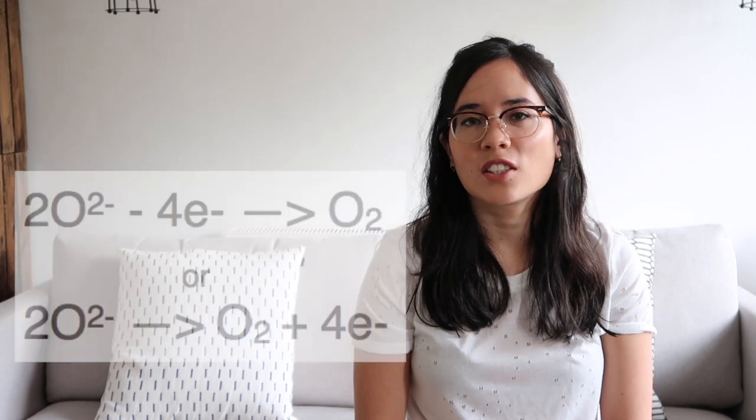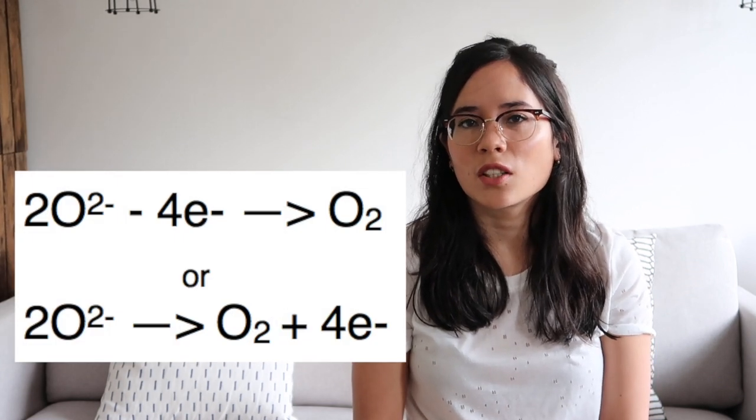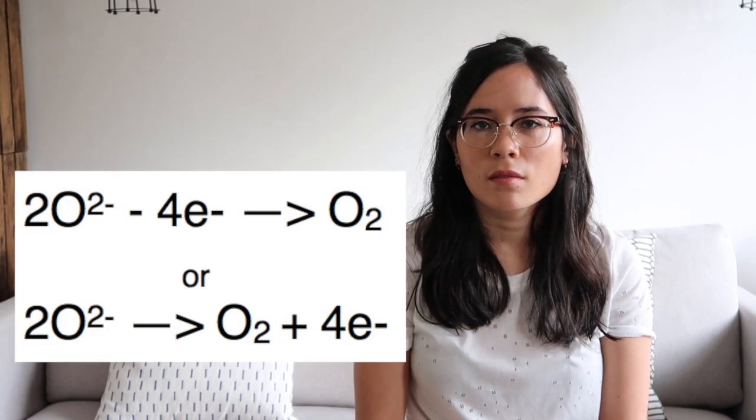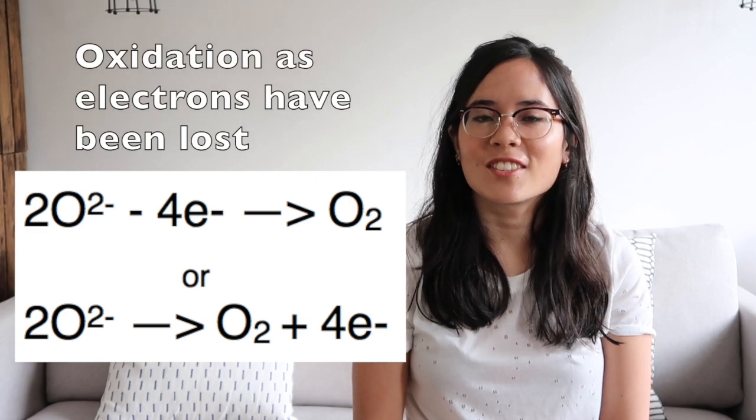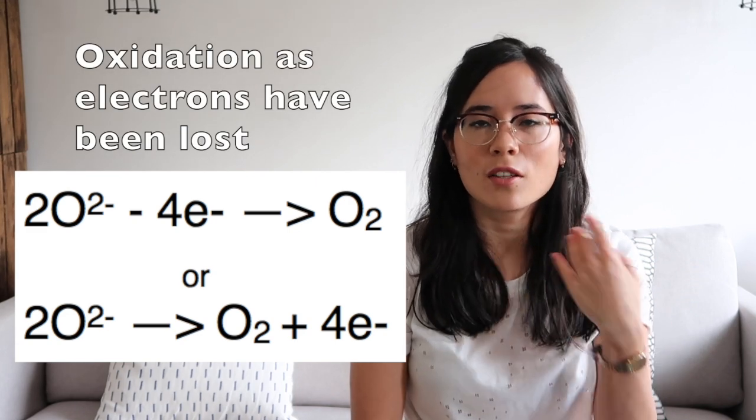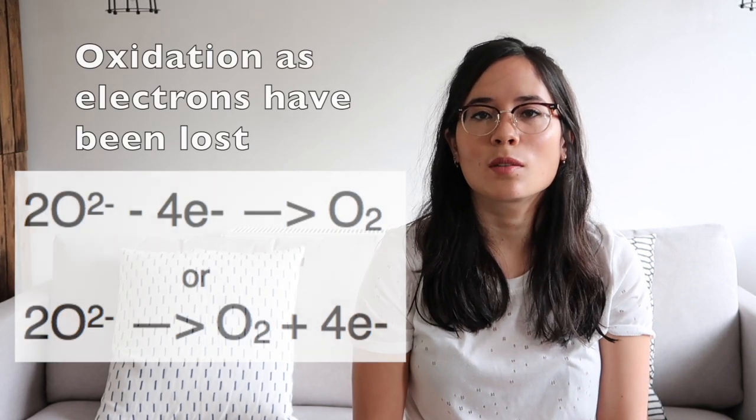Which ion discharges at the positive electrode? That's oxide, so it's going to turn into oxygen. Write the half equation — that should flash up. Is this oxidation or reduction and why? This is oxidation because you're losing electrons — the O2- needs to lose negativity, it needs to lose electrons to become neutral.